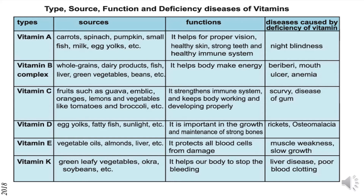Vitamin E. Sources include vegetable oils, almonds, liver, etc. Functions: it protects all blood cells from damage. Diseases caused by deficiency of vitamin E are muscle weakness and slow growth.